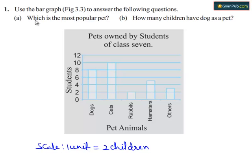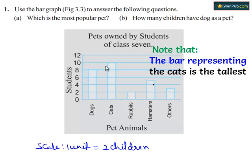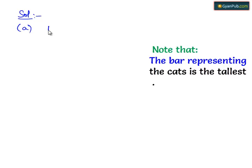Here in the first part, which is the most popular pet? Now let's move on to the solution. When we see the bar graph, the length of the bar graph is maximum in the case of pet animal cat. So the most popular pet is cat.